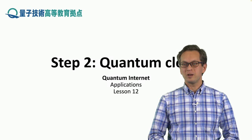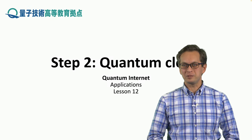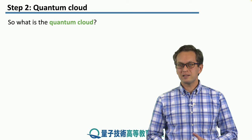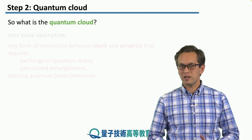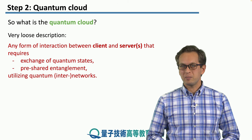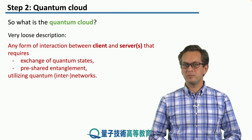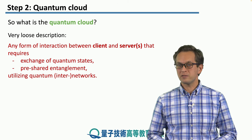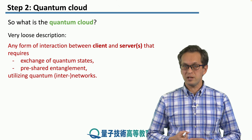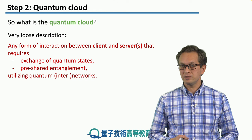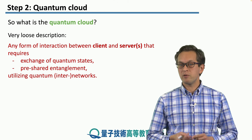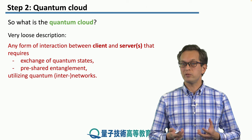Step 2: Quantum cloud. What is the quantum cloud? Well, it doesn't really exist yet, so we can only present to you a loose description. But basically, it's any form of interaction between a client and one server or multiple servers that requires exchange of quantum states, pre-shared entanglement, and utilizes quantum networks or even internetworks in the form of a quantum internet.